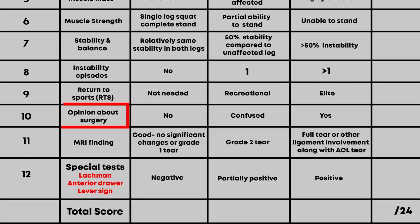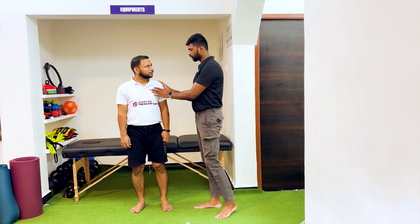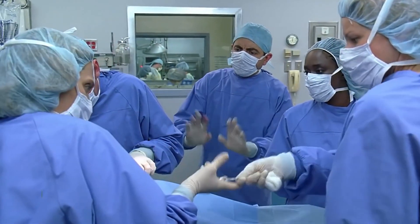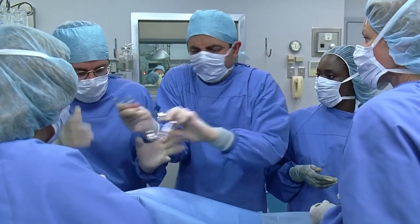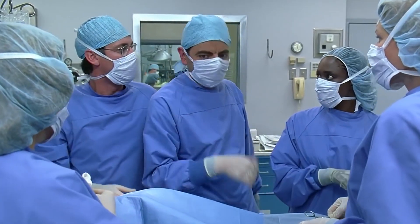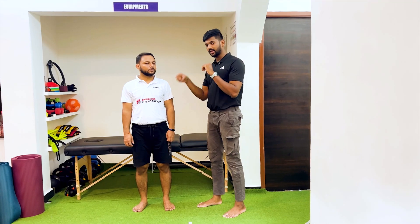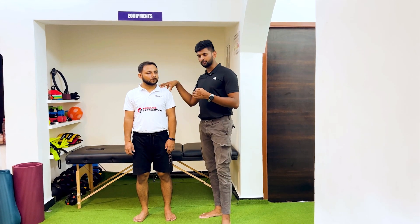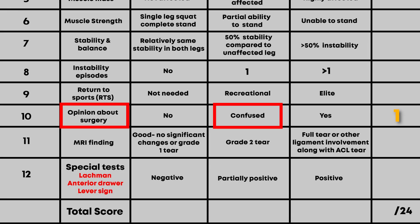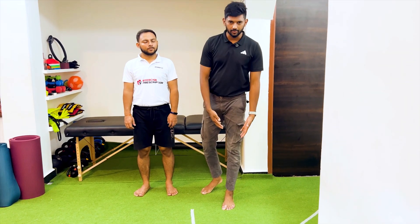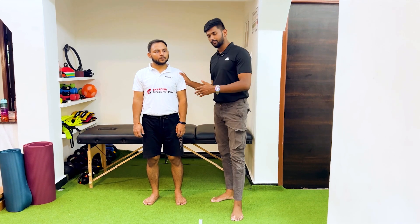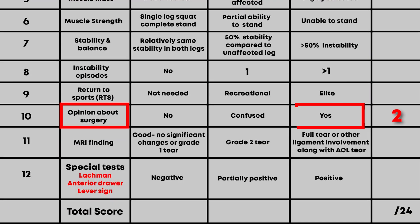The tenth point is the patient's opinion about surgery. Ask what they think about surgery and how they feel about it. Many factors influence this — financial status, doctor's opinion — which can confuse the patient. If the person has a confused mindset, score one. If they are confident they do not want surgery and feel their knee is manageable, score zero. If the person clearly wants surgery, score two.